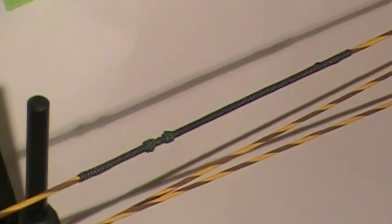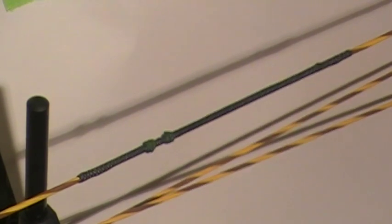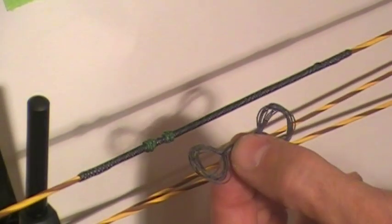In this video, I'm going to demonstrate how to install a catfish loop onto a bowstring. In a different video, I showed how to tie the catfish loop.